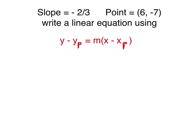Let's practice writing a linear equation using point-slope format. The slope they give us is negative 2 thirds. The point they give us is (6, negative 7). As you recall, the slope is m and the point they give you is x, y.